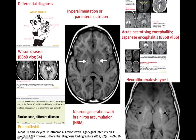In the differential diagnosis of chronic hepatic encephalopathy with high signal in the basal ganglia: Wilson's disease with copper accumulation, hyperalimentation or parenteral nutrition where patients also accumulate manganese, iron accumulation in a group of diseases called neurodegeneration with brain iron accumulation, hemorrhage for example in necrotizing encephalitis or Japanese encephalitis, and high T1 signal in lesions that calcify in neurofibromatosis.